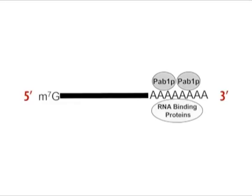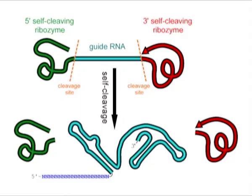Several studies demonstrate that mRNA export requires proper 3-prime processing, including addition of a poly-A tail and binding of multiple molecules of the poly-A binding protein, PABP1. Although some mRNAs can be exported if their 3-prime ends are generated through the action of a ribozyme, this is considered a non-physiological situation.